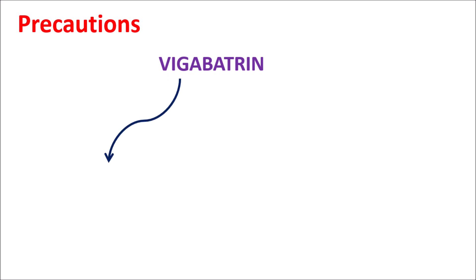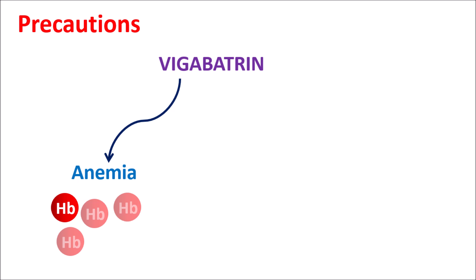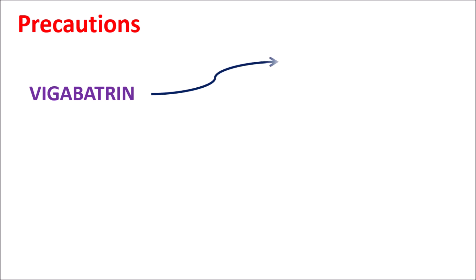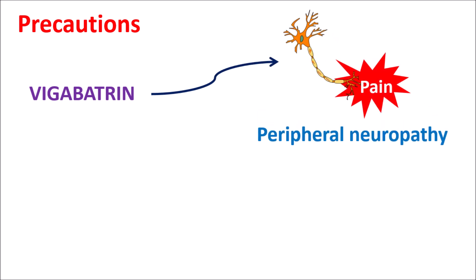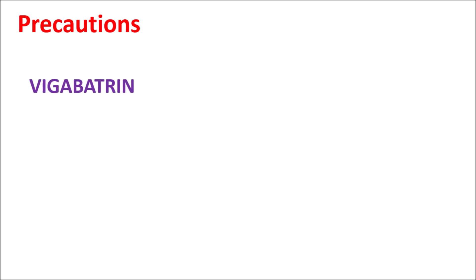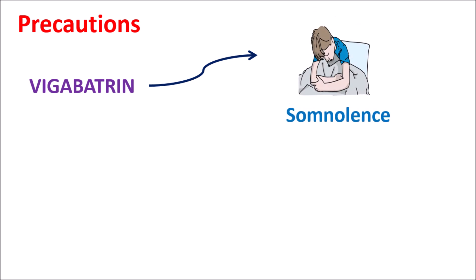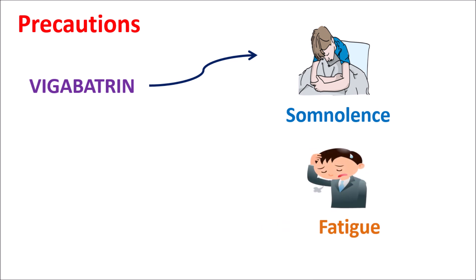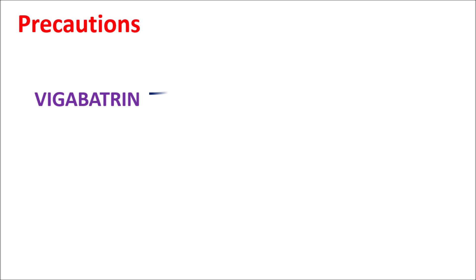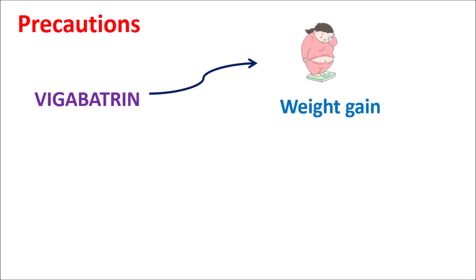Another important precaution is that Vigabatrin can produce anemia — decreased hemoglobin levels leading to increased fatigue. It can also cause edema, with swelling of the legs. This drug can also produce peripheral neuropathy, a neuropathic pain causing numbness and tingling sensation in the feet. Additionally, Vigabatrin can produce somnolence and drowsiness, leading to fatigue and lack of energy. Because of drowsiness, there is a risk of accidents while driving vehicles or working with machinery, so care should be taken during initial treatment. This drug can also cause weight gain, which is concerning as it may be used for several months.